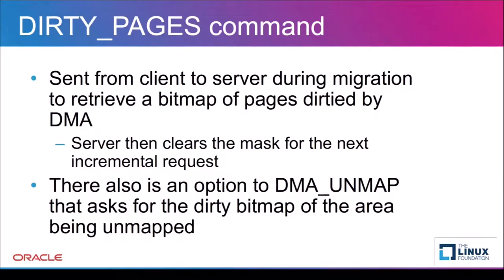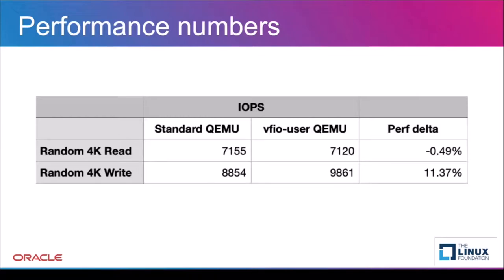The dirty pages command is similar to the FIOMMU one. It is sent by the client to the server in order to control logging of dirty pages, usually during a live migration. The message flags instruct the server to start or stop logging for a specific range, or indicate that the client expects the server to return the dirty pages map. We also did a quick performance test with the VFIO command to compare the experimental QEMU multiprocess implementation currently in upstream QEMU with VFIO user. The random read-write tests on the SCSI device emulated by the client and server using the VFIO user protocol did not show significant performance degradation compared to the one implemented with QEMU multiprocess.